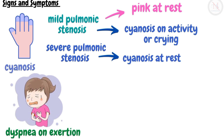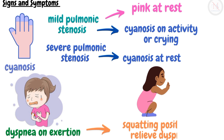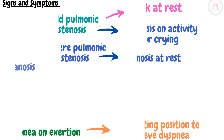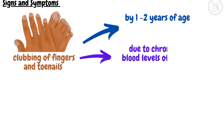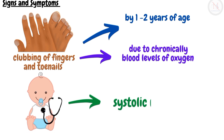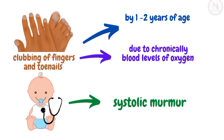Dyspnea on exertion occurs, and to relieve this, the child may assume a squatting position. Clubbing of fingers and toenails usually occurs by one to two years of age, and is caused by chronically low blood levels of oxygen. There is a characteristic systolic murmur that is often moderate in intensity.